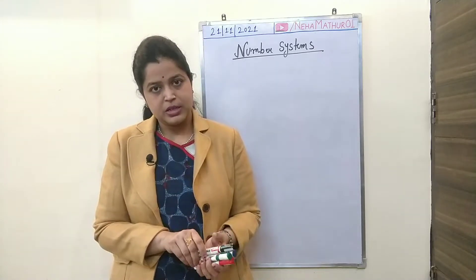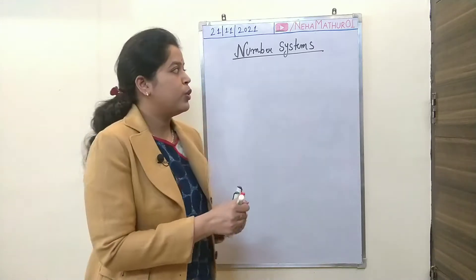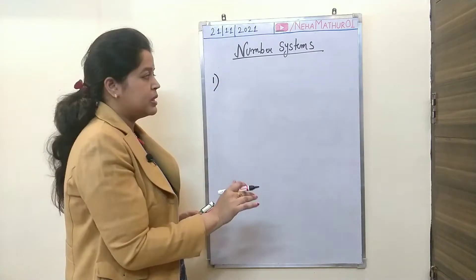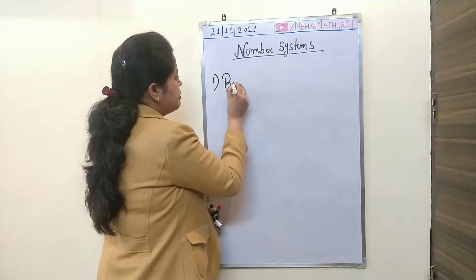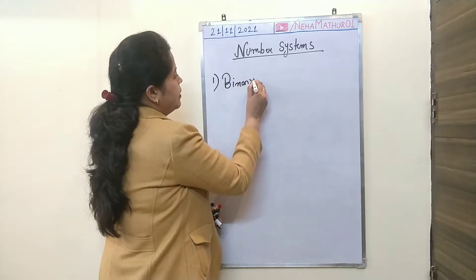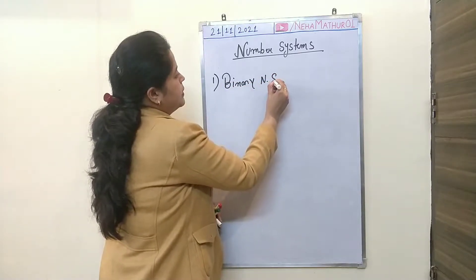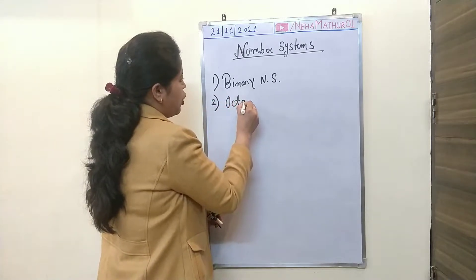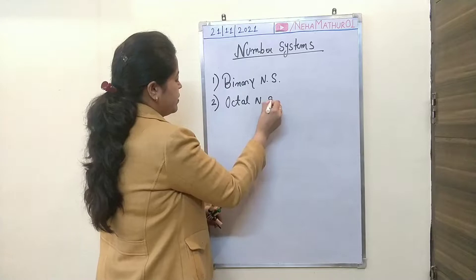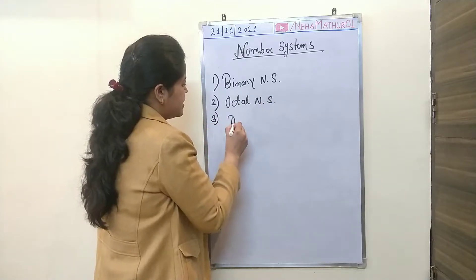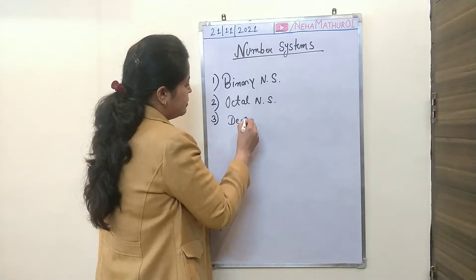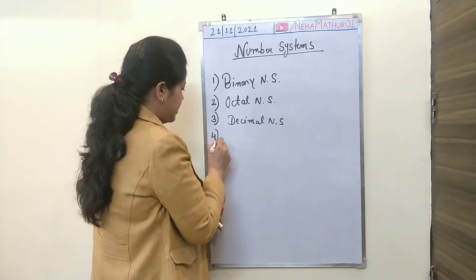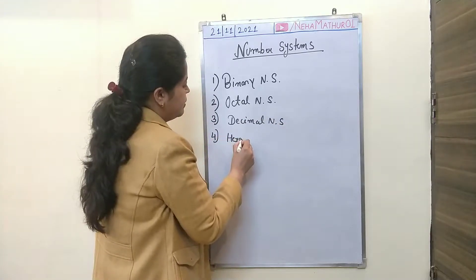In general, we have four types of number systems. The first basic number system is binary number system. The second is octal number system. The third is decimal number system. And the fourth is hexadecimal number system.